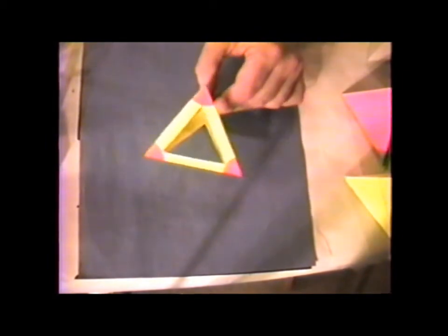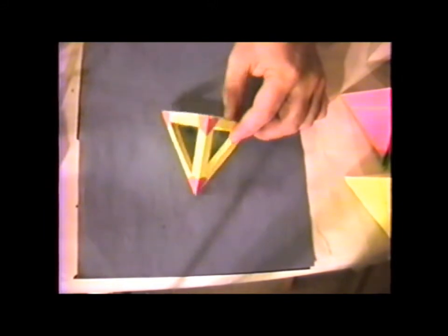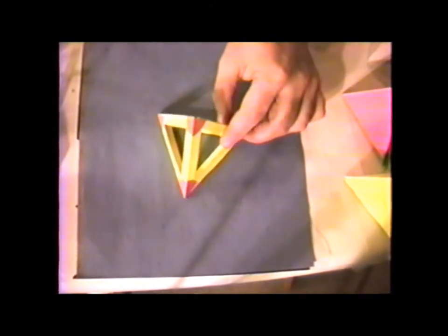And as we have seen before, the point group of methane is the point group of the tetrahedron, which is point group Td. So now let's see if we can lower the symmetry to find other chemically important subgroups.